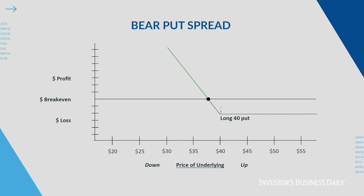On the risk graph, our long 40 put would be represented with a break-even price of 40 minus the premium paid, showing unlimited profit potential as the stock falls with a limited loss as the stock goes higher. When we combine the 30 short put, we cap our profit potential at the strike price of our short put. This shows that our break-even is going to be the long strike minus our net premium paid — so our break-even on this is $37.70 a share.